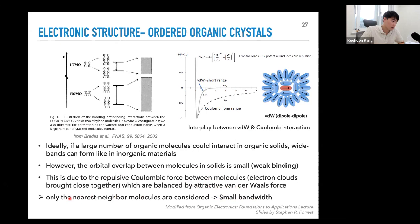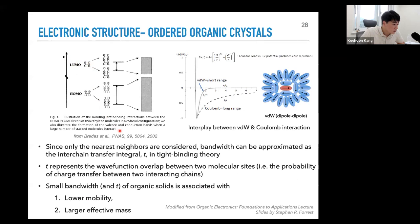As a summary: band transport and hopping transport resolve from the concept of bandwidth and how localized the charge carriers are. These are related to mobility, the parameter we use for comparing different materials. Mobility is related to the mean free path, which represents how far carriers can freely travel without scattering.